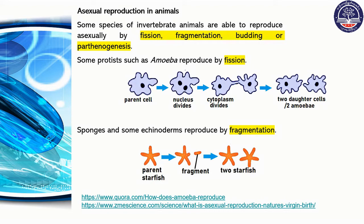The next question is about asexual reproduction. The methods include fission, fragmentation, budding, and parthenogenesis. Some protists, such as amoeba, reproduce by fission.